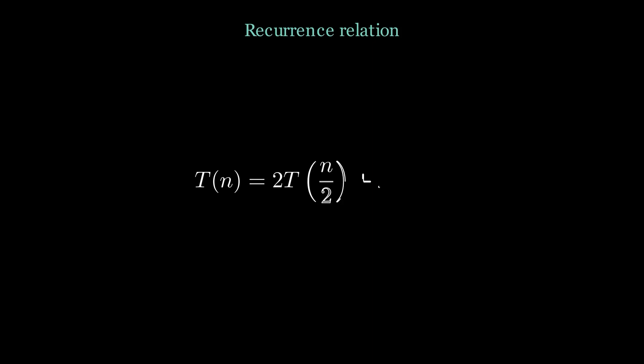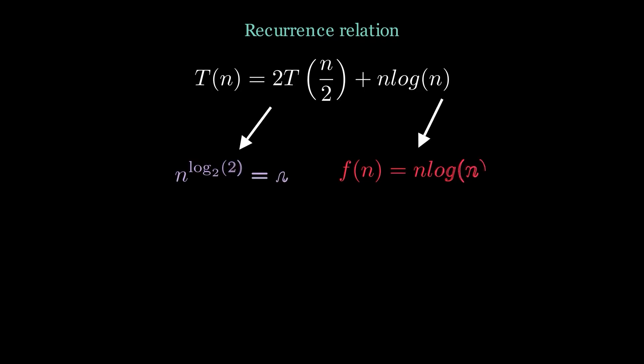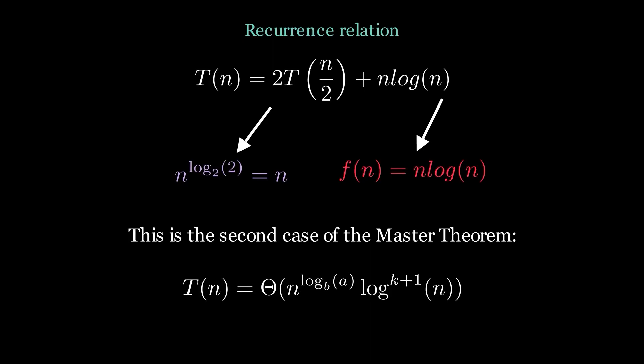In the next example, we have a logarithmic factor in the function, and if we compare the growth rates of recursive and non-recursive part of the equation, we can see that the non-recursive part grows faster, but the growth is faster by a logarithmic factor. So that means it lies in case 2 where k is 1 since there is 1 logarithm present. So substituting the values in the general equation will give the complexity Θ(n log² n).